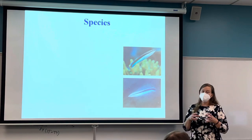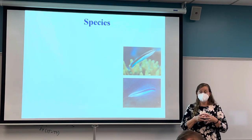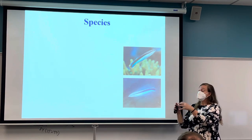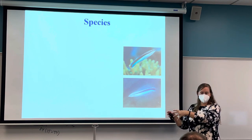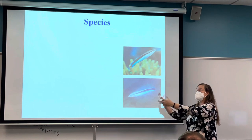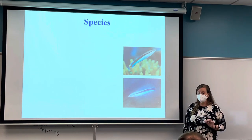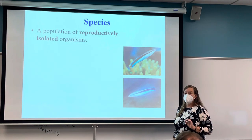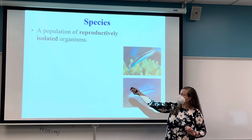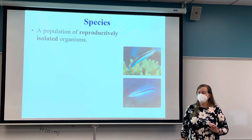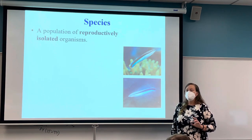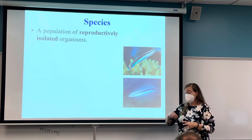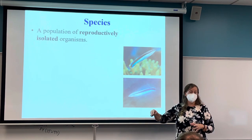In evolution, only members of the same species can reproduce successfully and pass on their genes to the next generation. If the next generation has advantageous genes from their parents, they can reproduce and pass on their genes. A species is called a reproductively isolated group of organisms. Reproductive isolation means you can only reproduce successfully, meaning your offspring are also fertile and can have offspring.